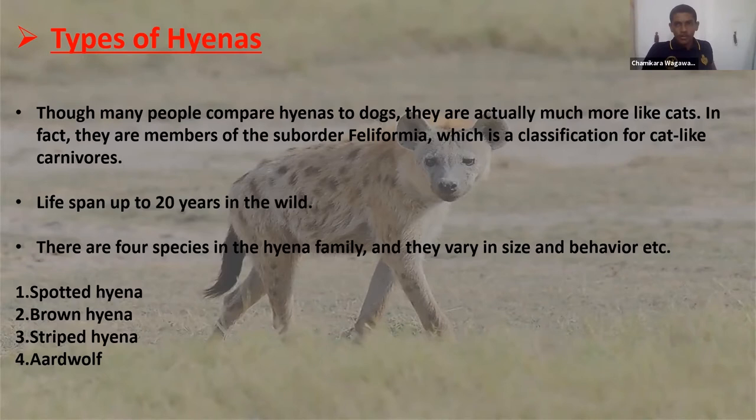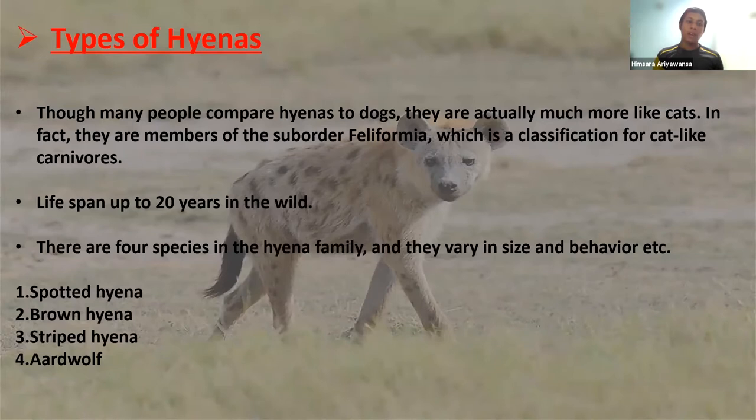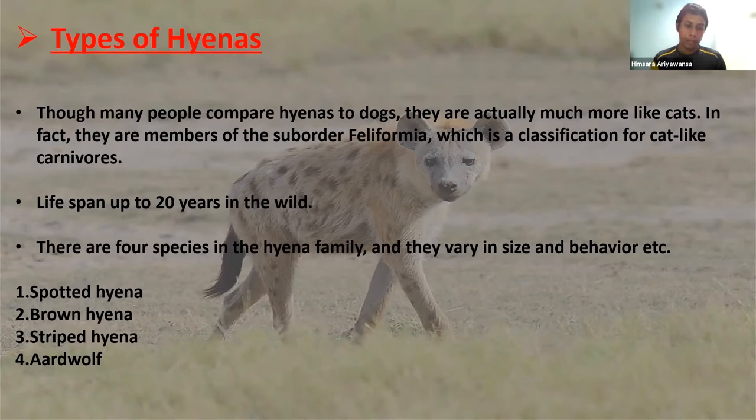Let's move on to our second topic — the types of hyenas. Although many people compare hyenas to dogs, they are actually more like cats. In fact, they are members of the suborder Feliformia, which is a classification for cat-like carnivores. The lifespan of a wild hyena is up to 20 years.